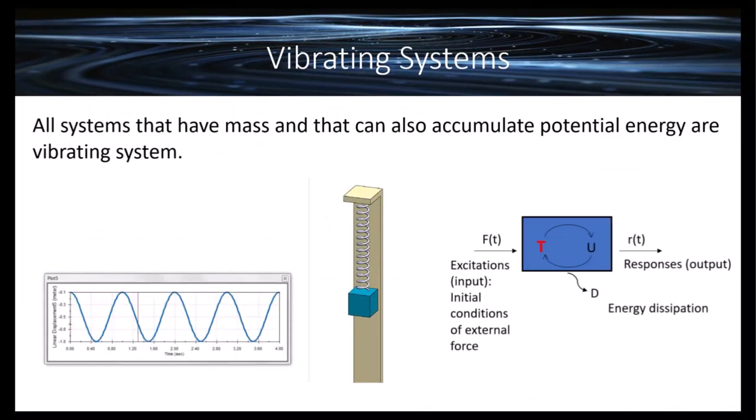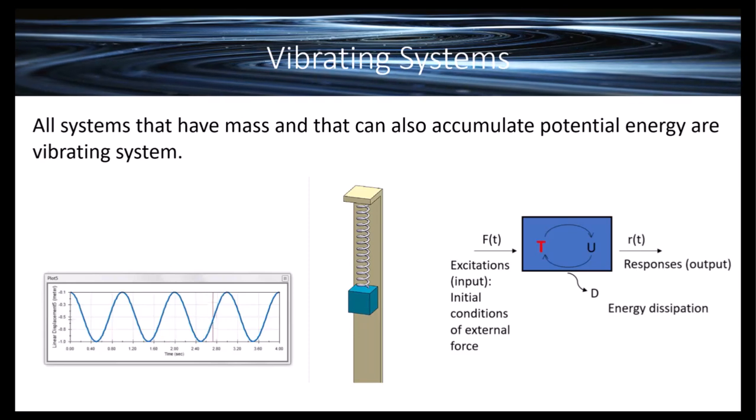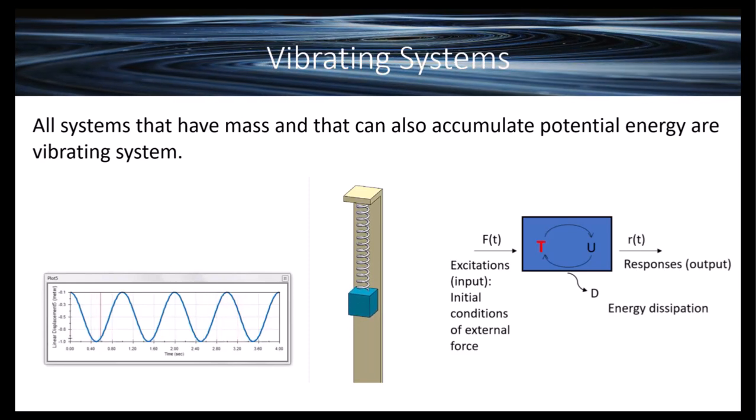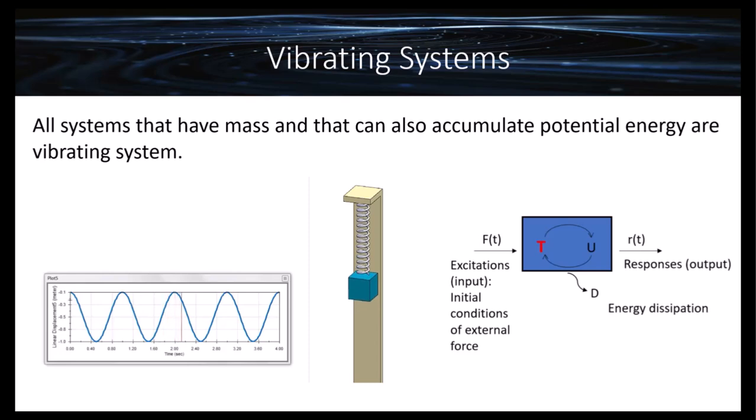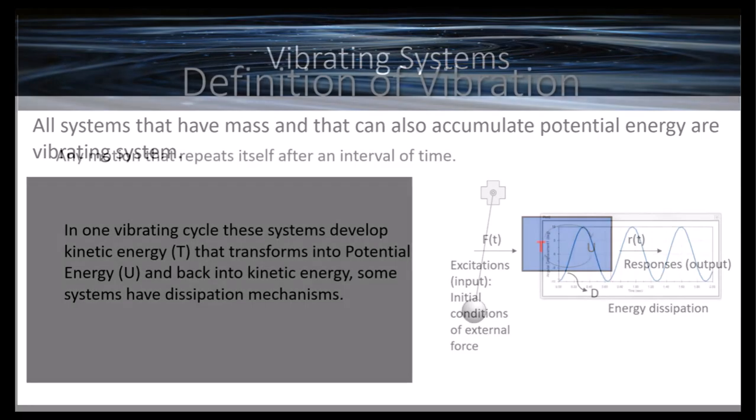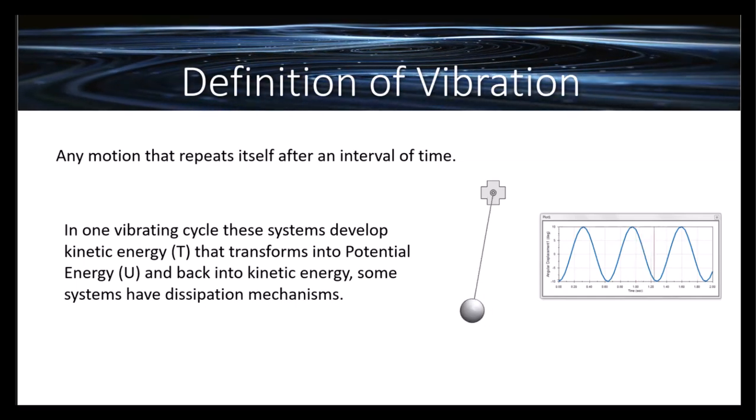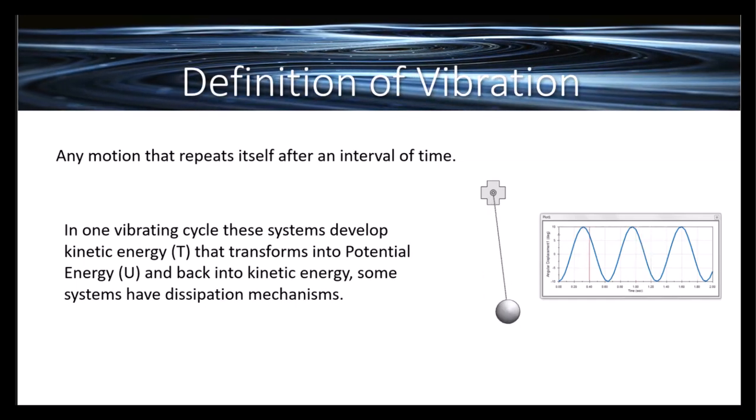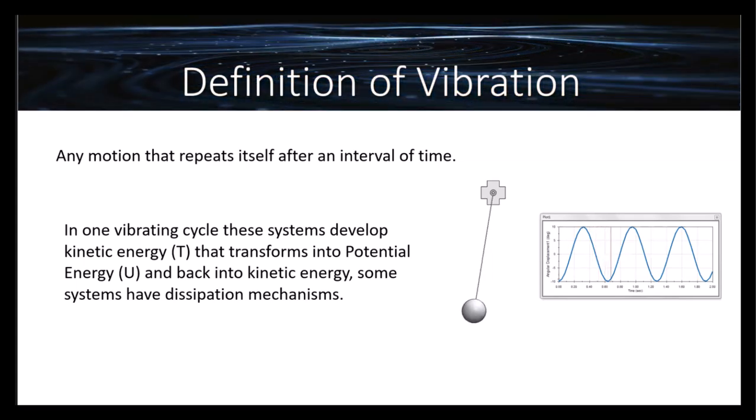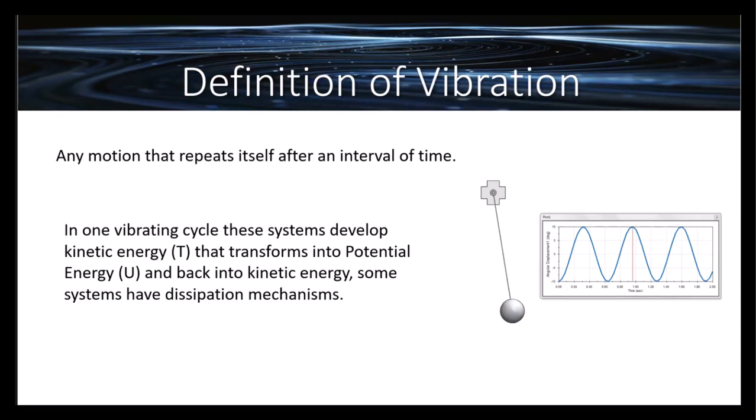All systems that have a mass and that can accumulate potential energy are vibrating systems. Therefore, a vibrating system in general includes a means of storing potential energy (a spring or elasticity), a means of storing kinetic energy (mass or inertia), and a means by which energy is gradually lost. We can define vibration as any motion that repeats itself after an interval of time. In one vibrating cycle, this system develops kinetic energy that transforms into potential energy and back into kinetic energy.